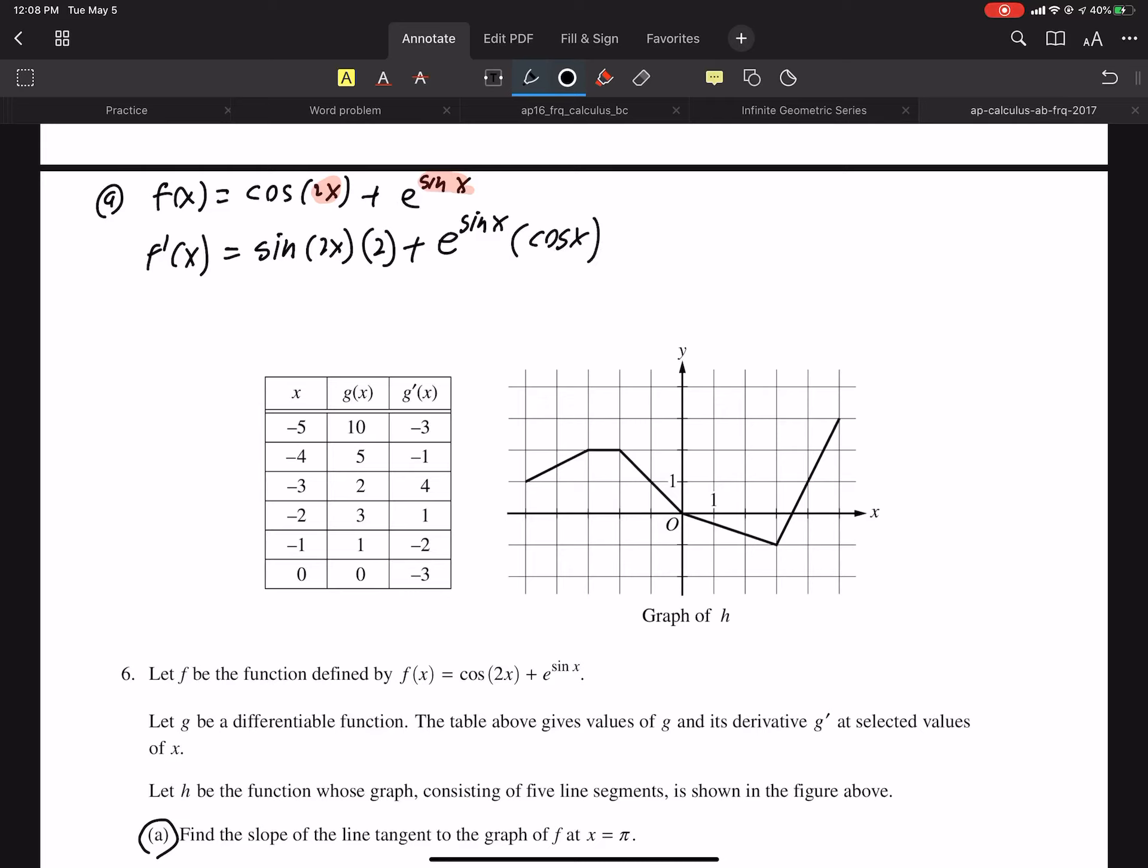Part D. Is there a number C in the closed interval from negative 5 to 3 so that g prime of C is negative 4? So is there a number C where the derivative equals something? That should scream mean value theorem to you or intermediate value theorem or one of those. And the mean value theorem guarantees that the slope of a tangent line will equal the slope of the secant line at some point if the function is continuous and differentiable. So we need to establish that. So part D, we want to look at function G. Function G. Look at that. They are so nice.